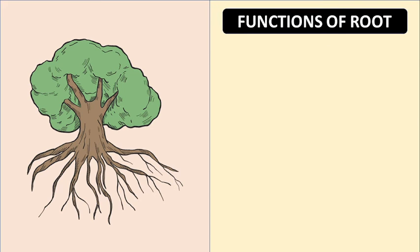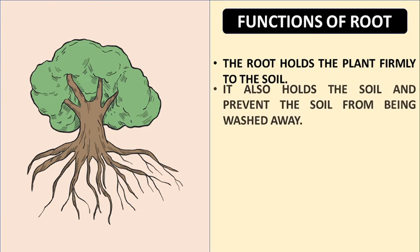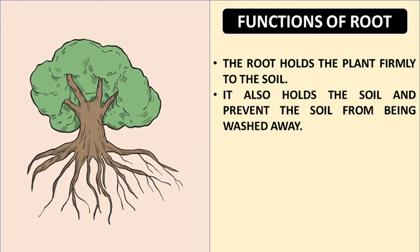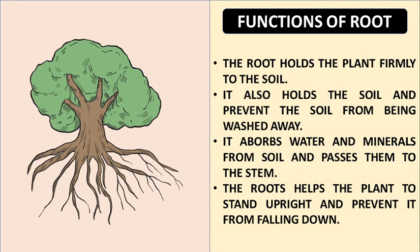Functions of root. The root holds the plant firmly to the soil and prevents the soil from being washed away. It absorbs water and minerals from soil and passes them to the stem. The root helps the plant stand upright and prevents it from falling down.